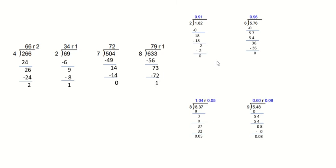Now we're going to move on to decimals. With decimals, we're going to write all of our zeros and bring them all down, because there will come a time where the zeros will have significant value. It's a different place value than numbers that don't have decimals — and we've already learned this.